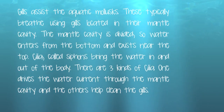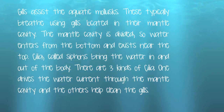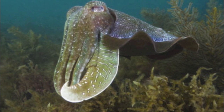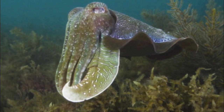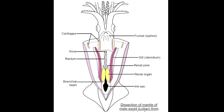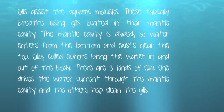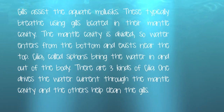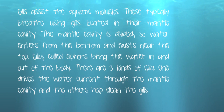Gills assist the aquatic mollusks. These typically breathe using gills located in their mantle cavity. The mantle cavity is divided so water enters from the bottom and exits near the top. Cilia, called siphons, bring the water in and out of the body. There are three kinds of cilia: one drives the water current through the mantle cavity, and the others help clean the gills.